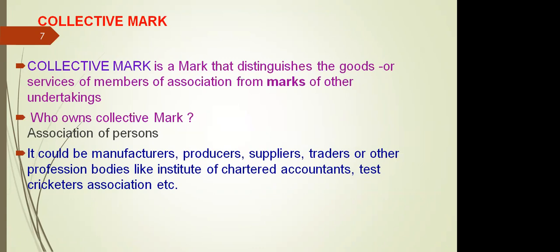A collective mark distinguishes goods and services of members of an association from those of others. It can be owned by manufacturers, producers, suppliers, and traders. For example, institutions like the Institute of Chartered Accountants or a Board of Cricketers Association will have their own particular trademark — a mark identifying the services of their particular association. No single person holds monopoly over it; the association itself, as a professional body, holds the collective mark. So we have three kinds of marks: trademark, service mark, and collective mark — and a trademark can also function as a service mark and vice versa.